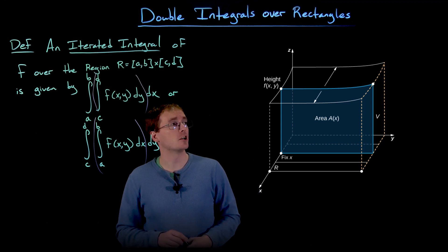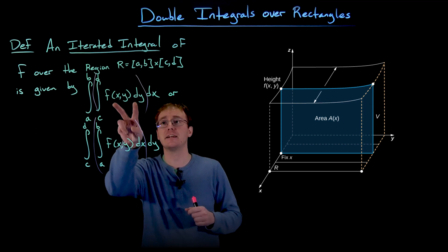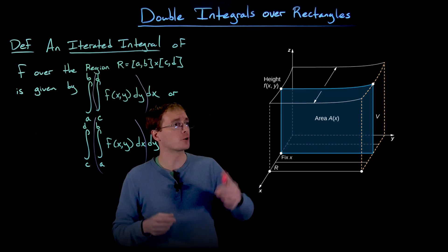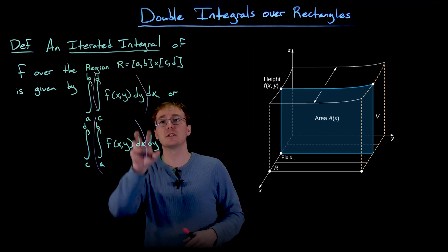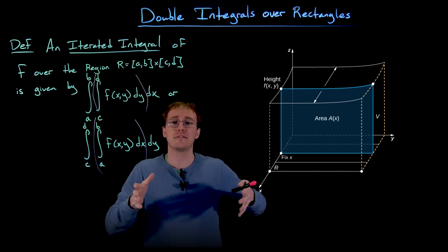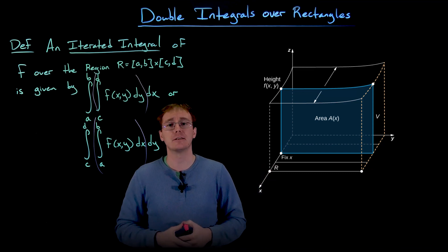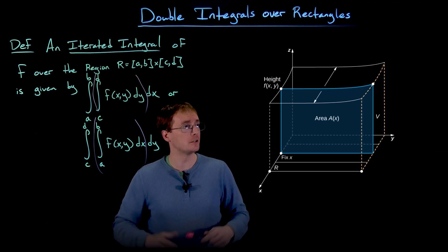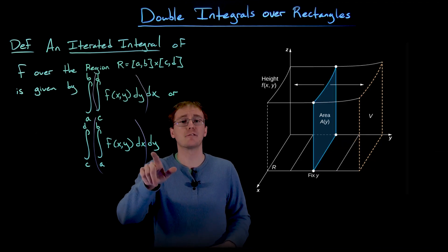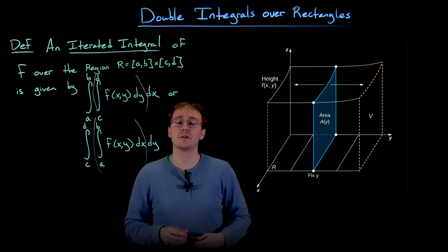In the first picture we fix a single x value at a time and integrate with respect to y, giving us the area of a vertical cross-sectional sheet. Then we move to a different x value, repeat the process, and add all those cross-sectional areas together to get the volume of the three-dimensional region. Or we could slice in the opposite order by fixing y instead.